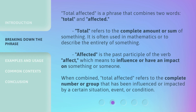Total Affected is a phrase that combines two words: Total and Affected. Total refers to the complete amount or sum of something, and is often used in mathematics or to describe the entirety of something. Affected is the past participle of the verb affect, which means to influence or have an impact on something or someone. When combined, Total Affected refers to the complete number or group that has been influenced or impacted by a certain situation, event, or condition.